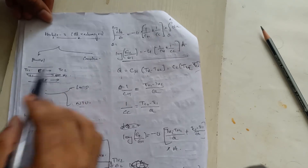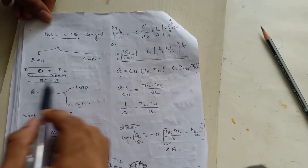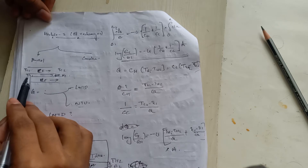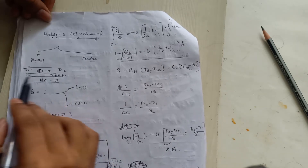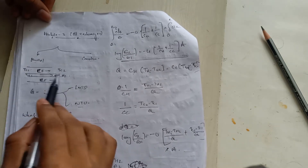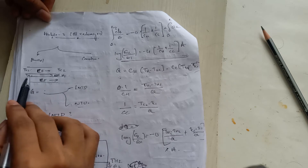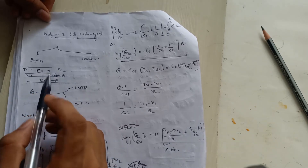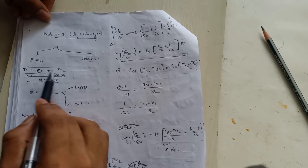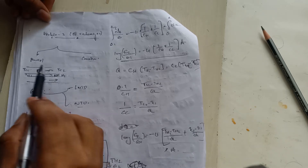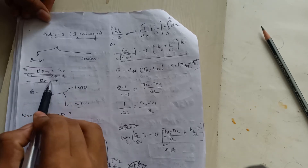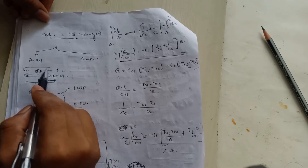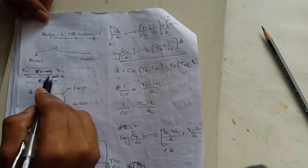The basic idea is that a parallel flow heat exchanger has two tubes — an outer tube and a small inner tube. In the inner tube, a hot fluid passes through, and in the outer area, a cold fluid passes. Both fluids pass in the same direction, which is why it is called a parallel flow heat exchanger.